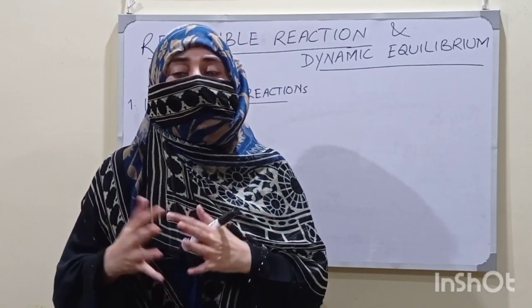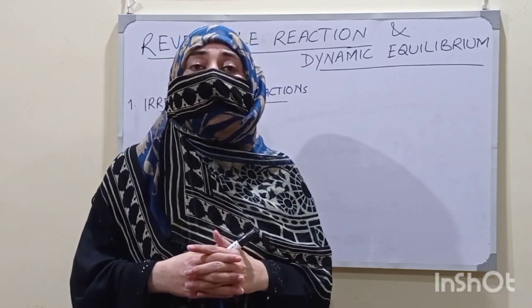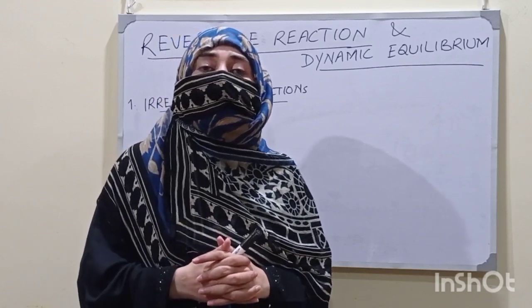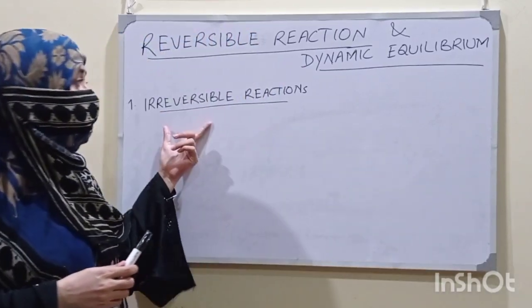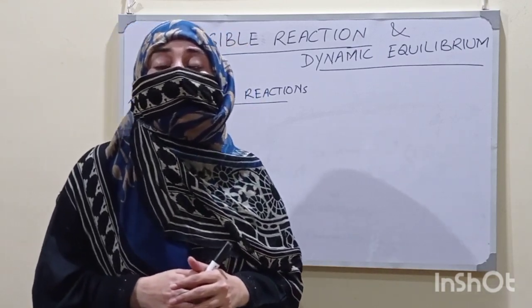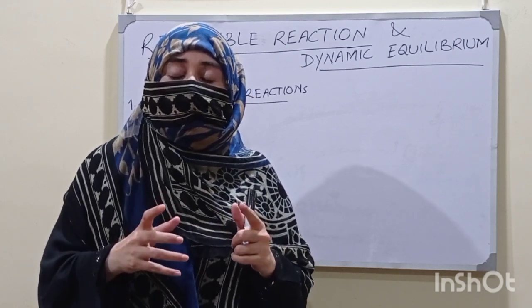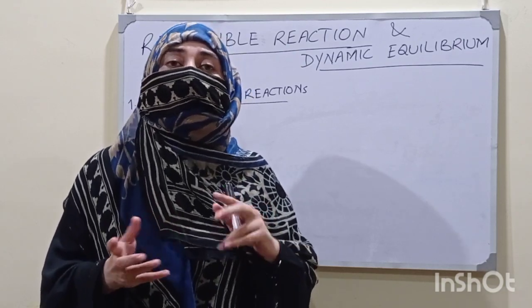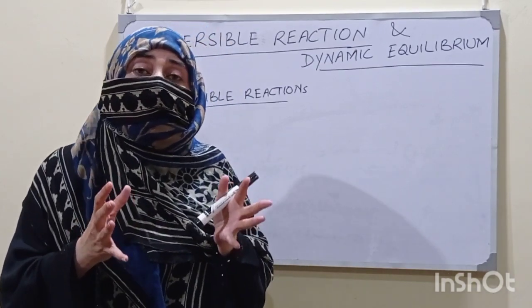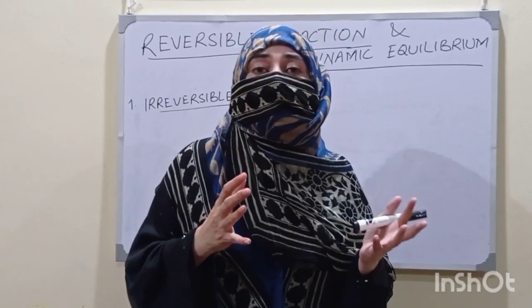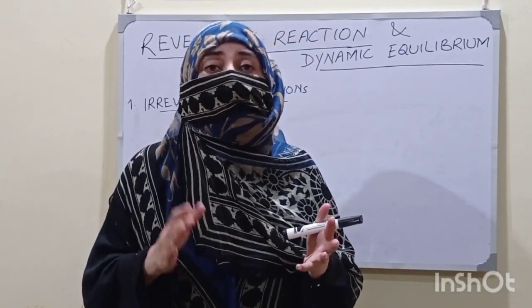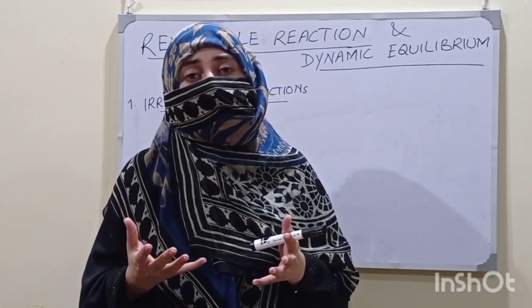But when we talk about chemistry, there are certain reactions which are irreversible and some are reversible. Irreversible reactions are those which are supposed to complete. They proceed in only one direction — the reactants are combined together to make a new substance called a product, and this product is not decomposed back into the reactants. This process is called an irreversible reaction.